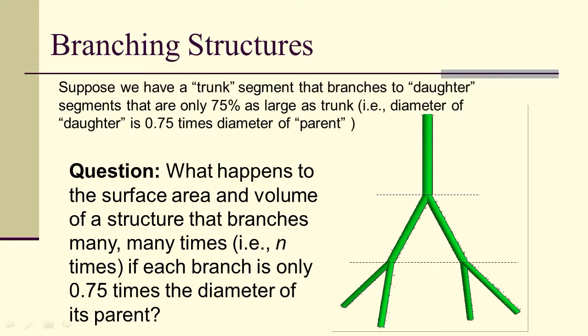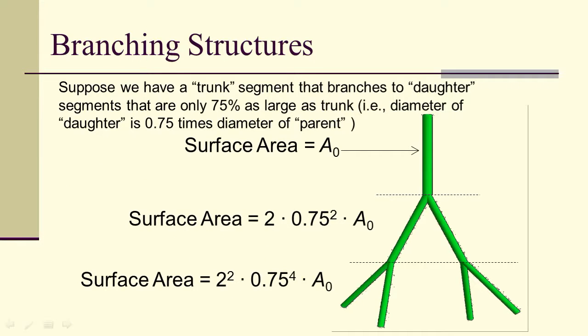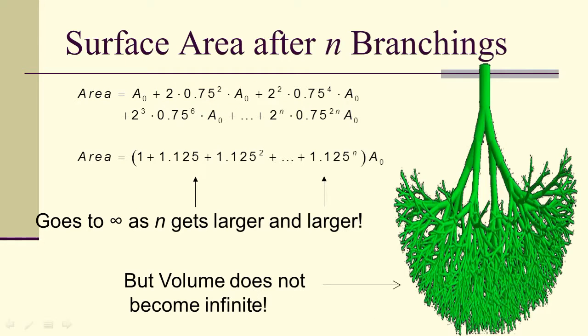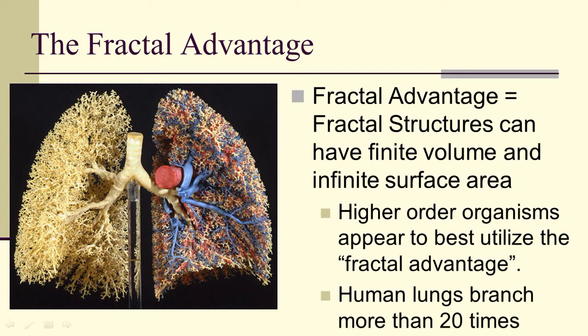What happens to the surface area and the volume of this branching structure if each branch is only 0.75 times the diameter of its parent? You start out with a surface area. The second, each one of the branches is a smaller surface area, but there are two of them. And twice that gives you more surface area than the original. Then the next branching you have four, and the total surface area of all four collectively is more than the previous two. The area goes to infinity as n gets larger and larger. But I can take this entire branching structure and put it into a suitcase. Therefore, the volume is finite, but the surface area is becoming infinite. This is what's known as the fractal advantage.